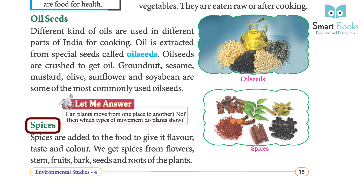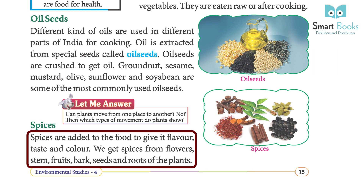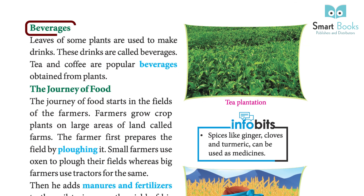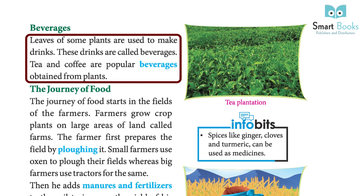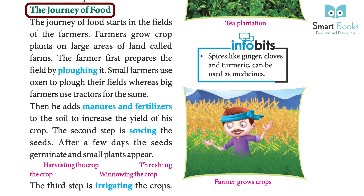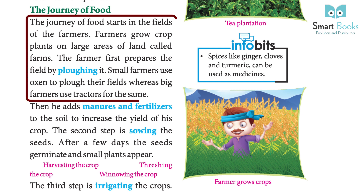Spices are added to food to give it flavor, taste, and color. We get spices from flowers, stems, fruits, bark, seeds, and roots of plants. Leaves of some plants are used to make drinks called beverages. Tea and coffee are popular beverages obtained from plants.